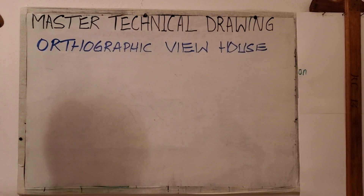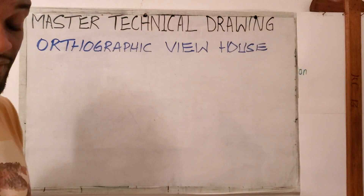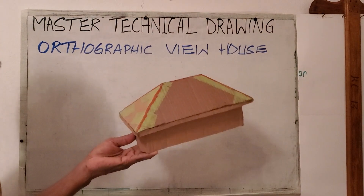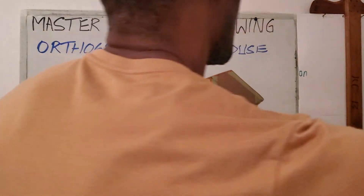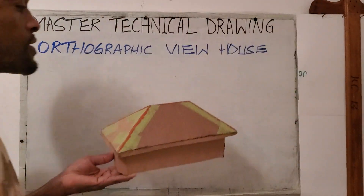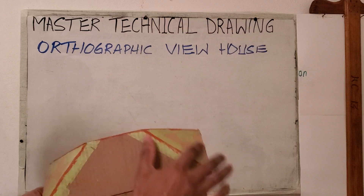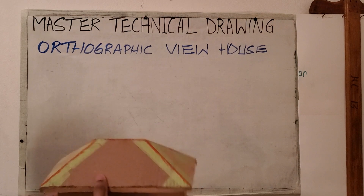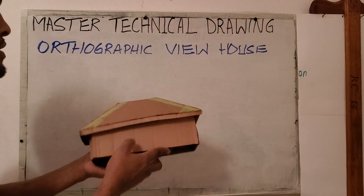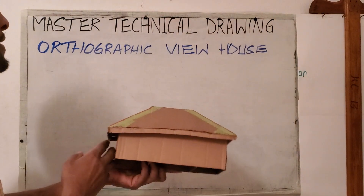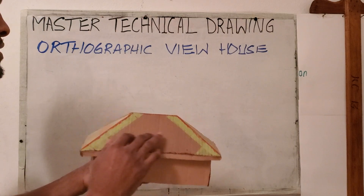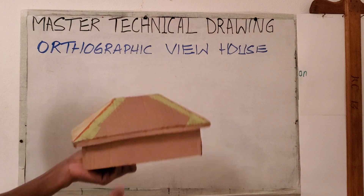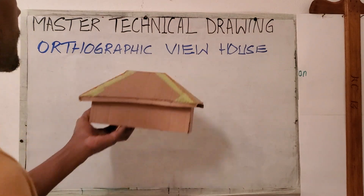Welcome back guys and girls. In this video I'll be showing you how to produce the orthographic projection for a typical building. This is the typical building front, with the fascia board and a nice little hip roof.